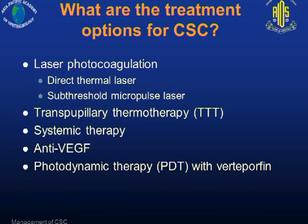What are the treatment options we have for CSC? Previously, we applied direct thermal laser photocoagulation. More recently, we have been using subthreshold micropulse laser to treat some of these patients. Transpupillary thermal therapy has also been used. I will also briefly touch upon systemic therapy and anti-VEGF therapy, but the main bulk of my patients are treated with photodynamic therapy.